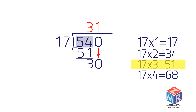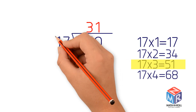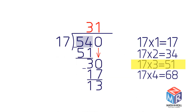So write the 1 above the 0, and then multiply 17 by 1 to get 17. Write the product under 30. Subtract 17 from 30 to get 13. The result should be less than the divisor. 13 is less than 17, so it's okay. You have no more numbers to bring down. 13 is the remainder.